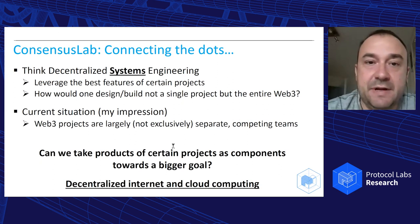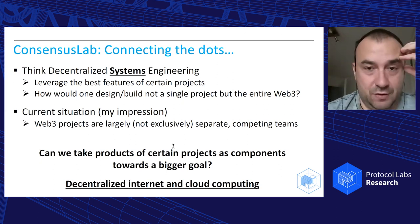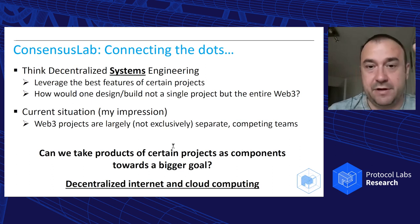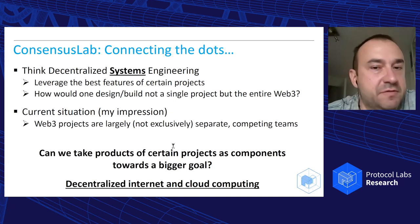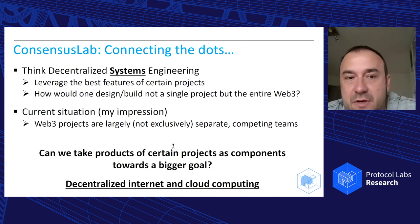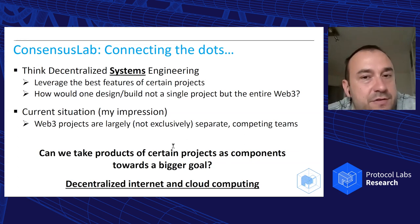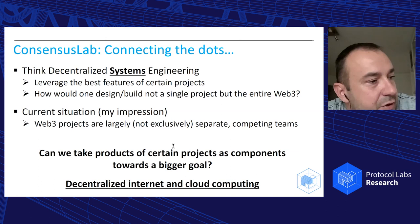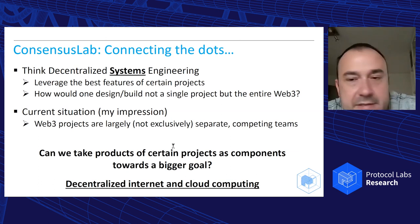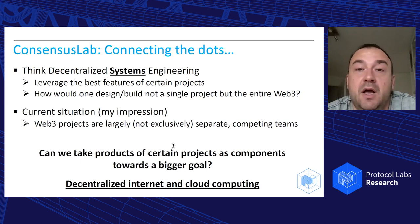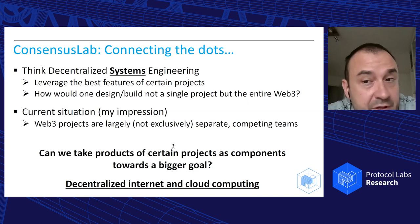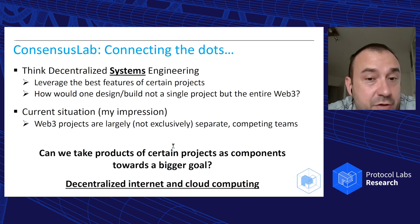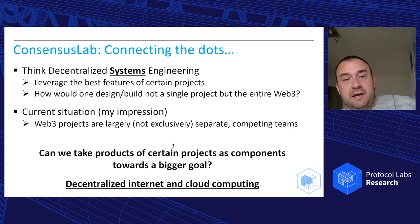Consensus Lab takes a 'connecting the dots' approach. Because it's about bringing Web2 workloads to Web3, the idea is not to look at these problems from the perspective of a single blockchain project. It's not about scaling Filecoin consensus — it's really like, can we think about the whole space and build an engineered system that reuses things built by different teams? My impression moving from the permissioned world to the permissionless world is that Web3 projects largely appear as islands of research and development.